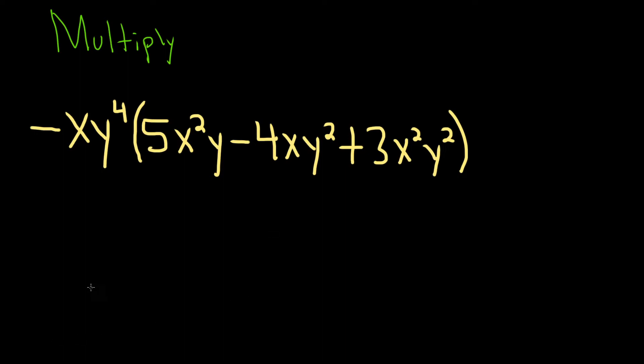In this problem, we have to multiply these polynomials. So to do this, we basically take this piece here and we multiply it by each of these terms.